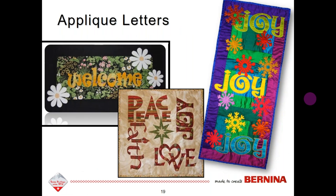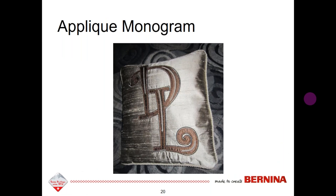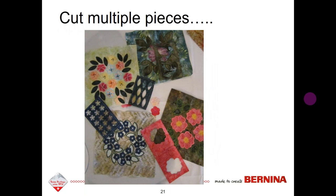Don't forget you can do applique letters and applique monograms as well. The beauty of the Cutwork tool is that you can cut out multiple pieces at the same time. If you're doing a quilt block with different shapes or the same shapes in different colors, you can stack up your different colored fabric and cut them all at once. Similarly, for all the leaves that are the same shape, they can be cut all at once — it's a very efficient process.